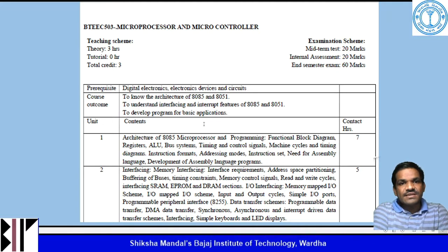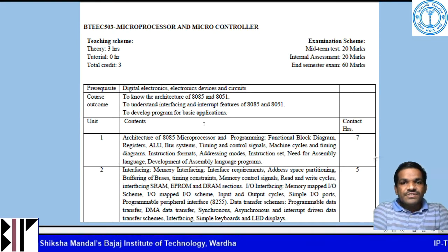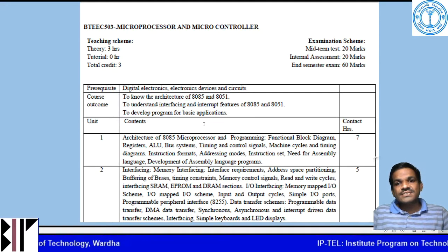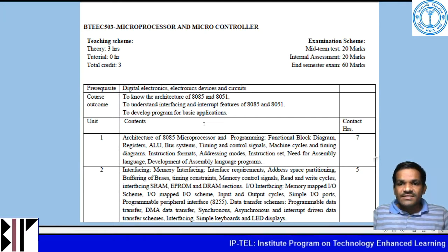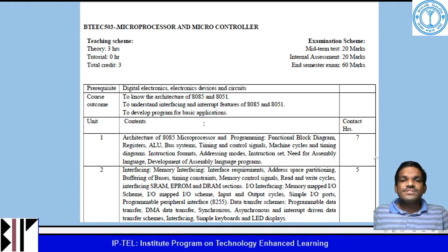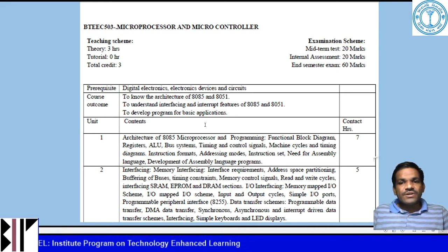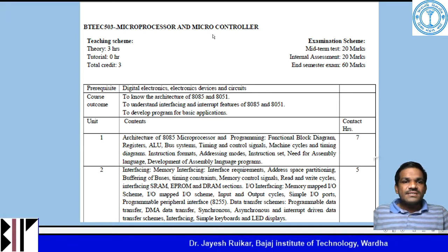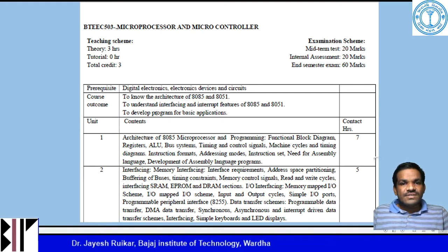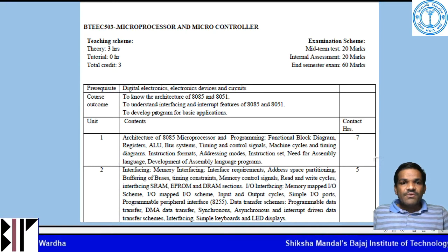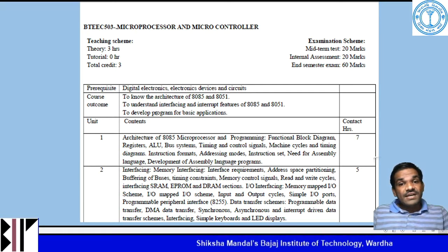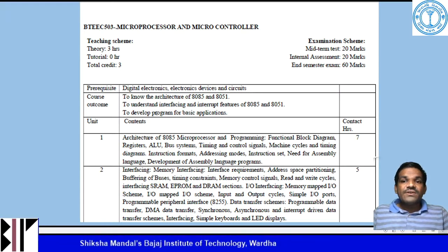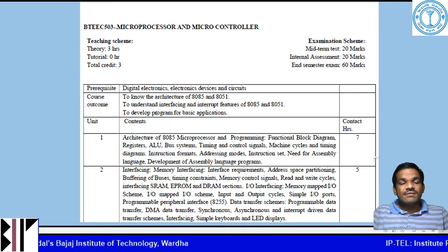Now let us see the syllabus of the course. The university syllabus for this microprocessor and microcontroller course requires 34 hours of teaching, and my aim is to finish the course within that deadline. The prerequisite courses are digital electronics and solid state devices, which you have already studied in your second year. The course has six units. The first unit covers the architecture of the 8085 microprocessor and programming, including the instruction set, addressing modes, and assembly language programming.